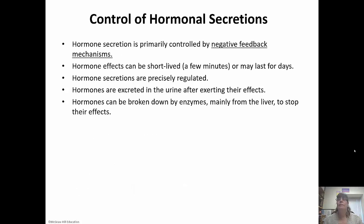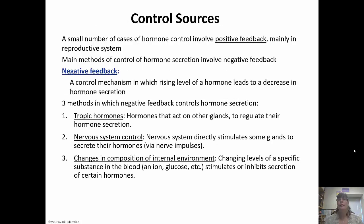Hormone secretion is primarily controlled by negative feedback — most everything in our body is controlled by negative feedback. Hormones can be short-lived or last for days, so secretions must be precisely regulated. They can be excreted in the urine or broken down by enzymes to stop their effects. A small number are controlled by positive feedback, usually in the reproductive tract. Negative feedback operates through three mechanisms: tropic hormones, nervous system control, or changes in the composition of the internal environment. Tropic hormones are hormones that one endocrine gland secretes to regulate another endocrine gland.